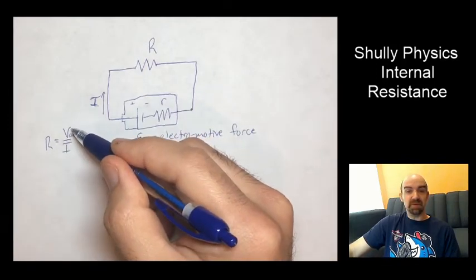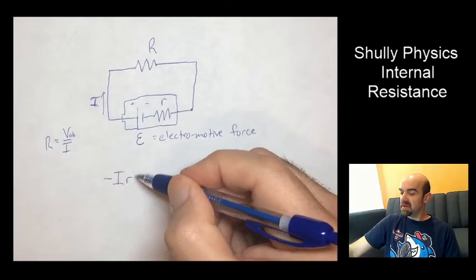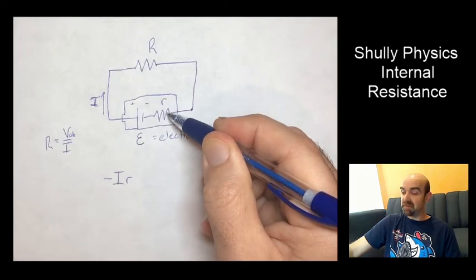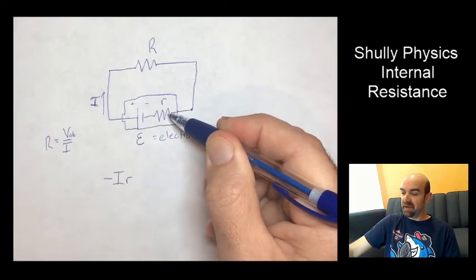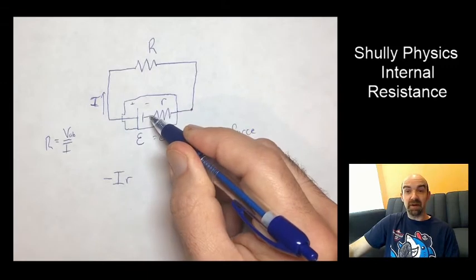So that would give us the VAB for the resistor equal to I R. Now this resistor I'm using is a little r, representing the internal resistance of the battery. So we're going to have a change of potential of negative I R.